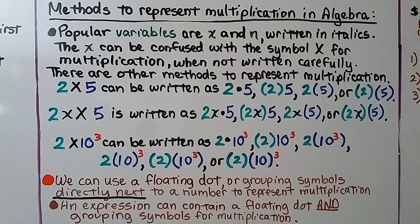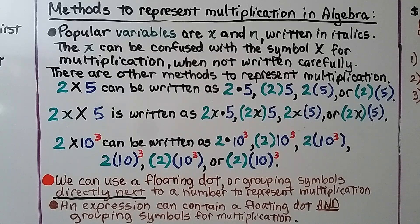You might want to take notes on this part unless you're already familiar. There are several methods to represent multiplication in algebra, and you'll see these as you advance in grade levels. A variable is a letter that takes the place of an unknown amount. Popular variables are x and n, written in italics. The variable x can be confused with the multiplication symbol × when not written carefully.